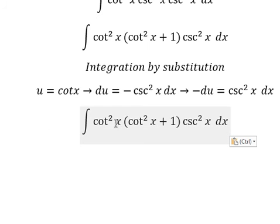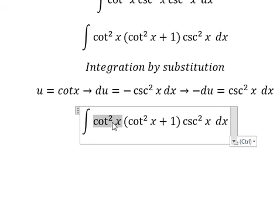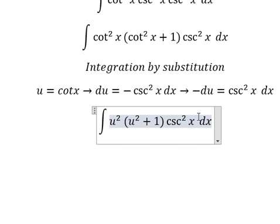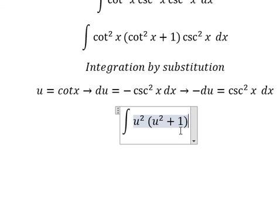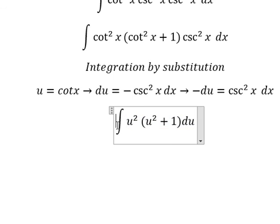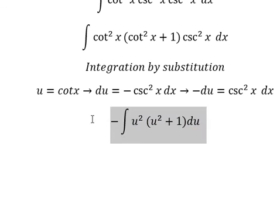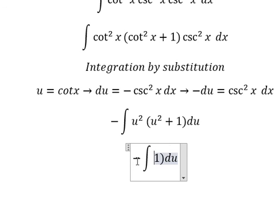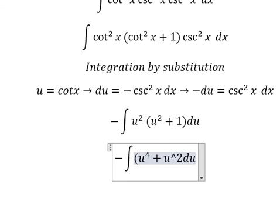So we change this to u, and we get u squared. The cosecant squared x dx we change to negative du. So we have u squared multiplied by u squared plus one, which gives us u to the power of four plus u squared.